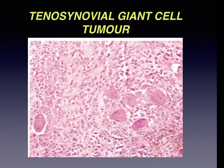The histological picture of tenosynovial giant cell tumor shows multinucleated giant cells haphazardly arranged among small oval to spindle-shaped mononuclear cells.